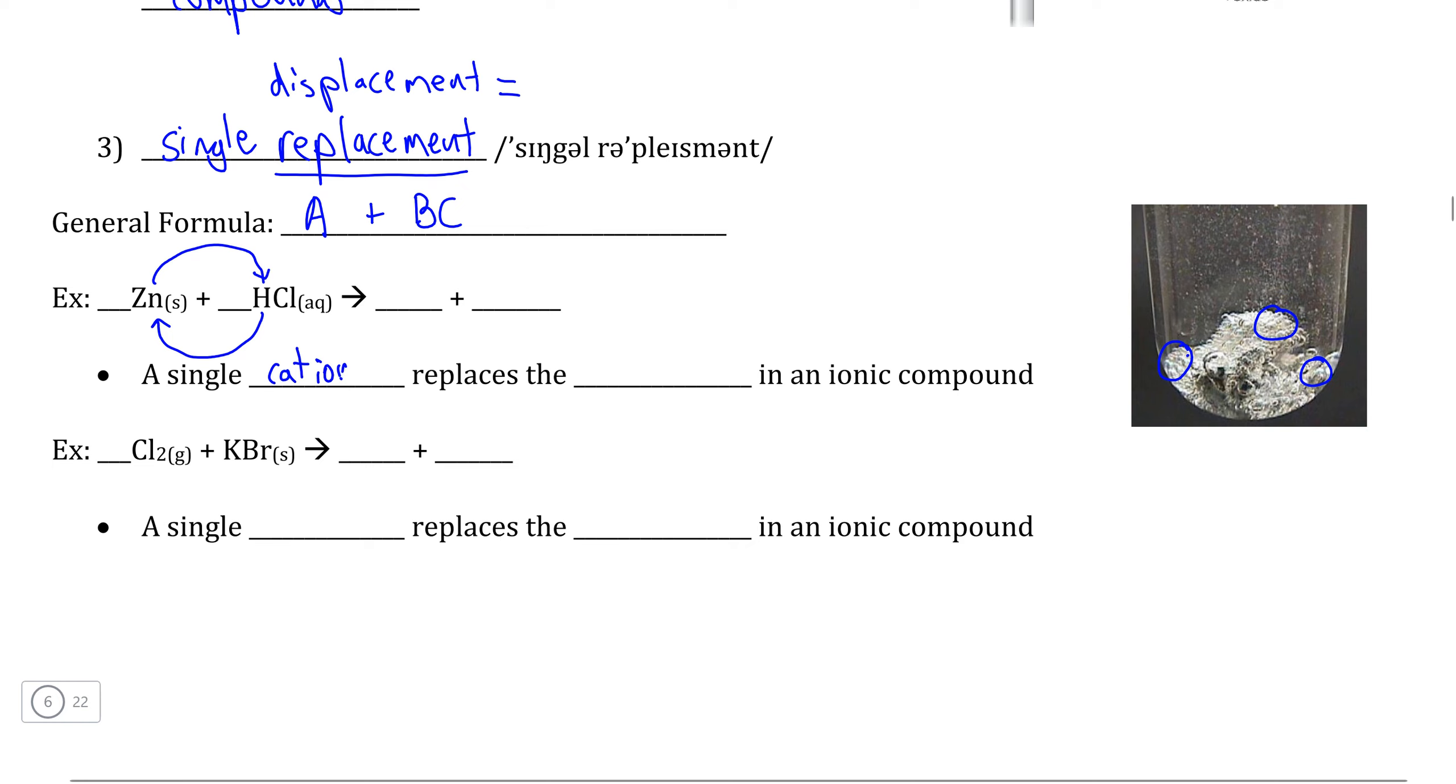So in this case, zinc is taking the place of hydrogen that would normally function as the cation in order to make a new compound, zinc chloride, in this case. So in this case, zinc, the metal, and we're going to put metal in quotation marks here, simply because hydrogen is not technically a metal, but normally functions the way that cations do.